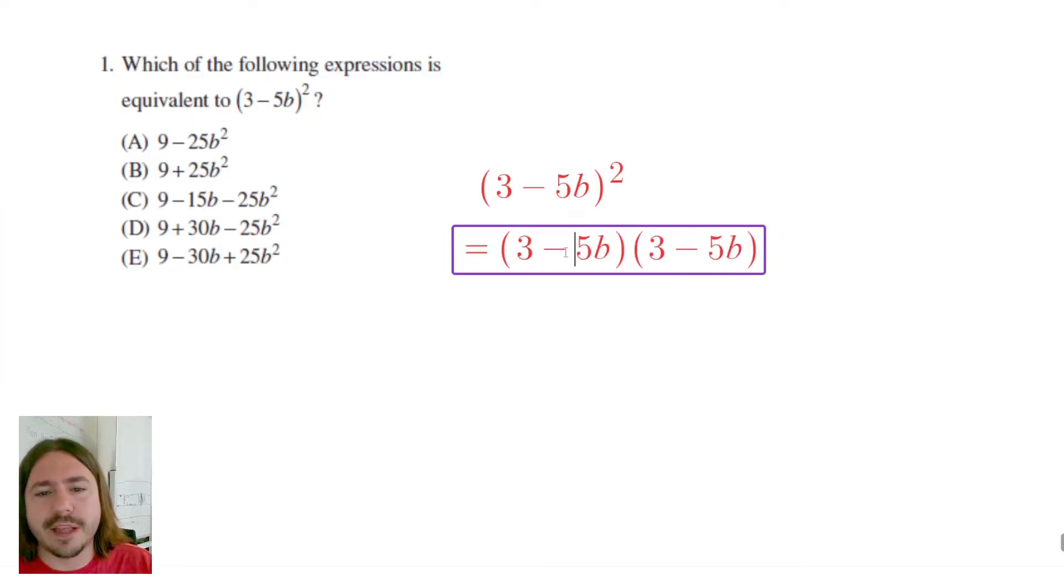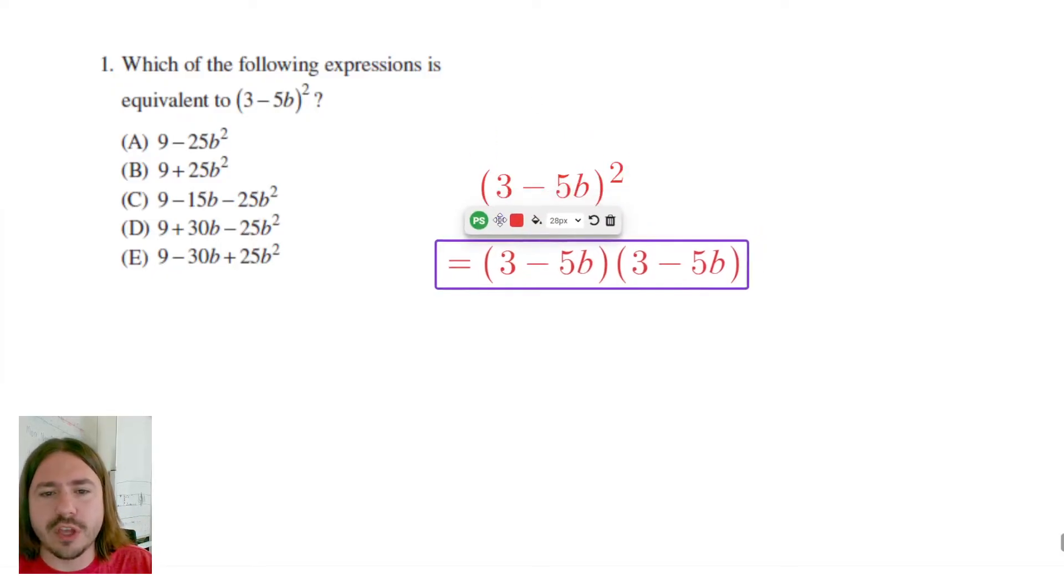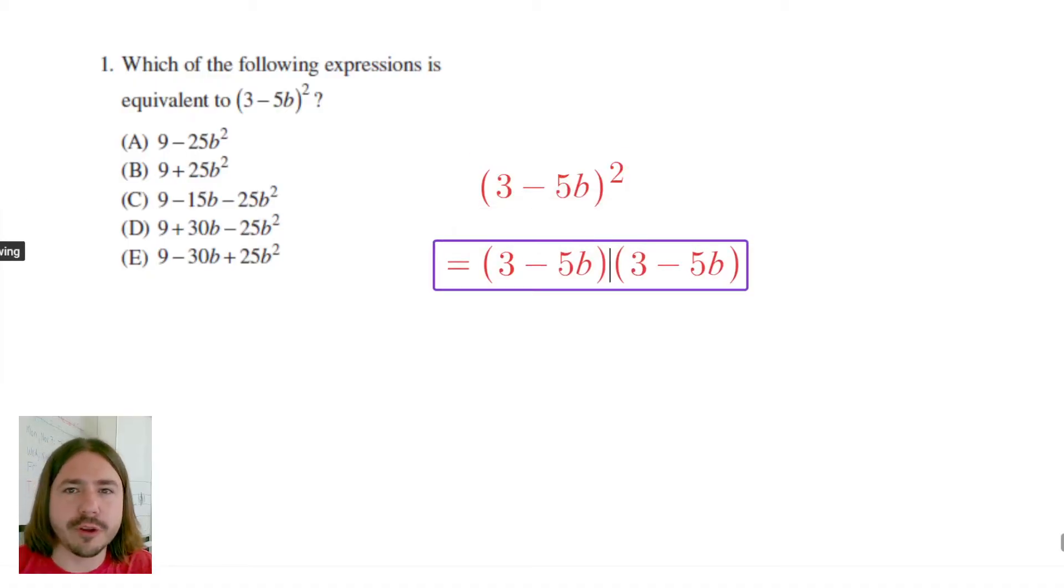Once you have it set up like this, you can see that we can use the distributive property to multiply these two binomials. Sometimes this is called FOIL. It's an acronym that helps you remember which order to multiply these in, although the order honestly doesn't matter. You just need to make sure that you multiply each term in the first binomial by each term in the second binomial.